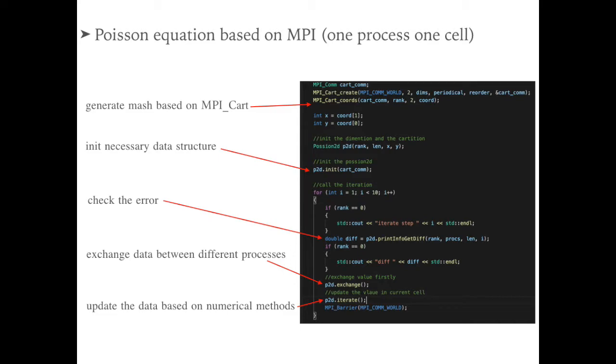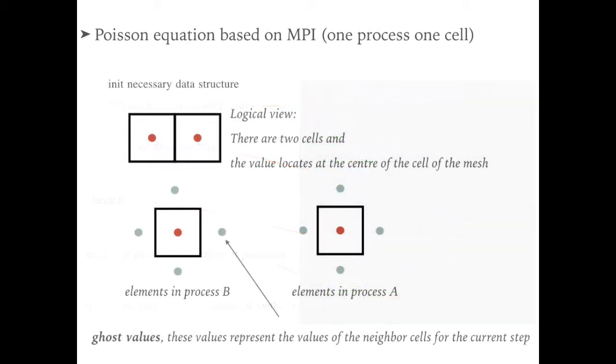Before diving into details of every step, let's discuss the concept of ghost values firstly. For the upper figure, there are two cells, and every cell contains one value. This is how we consider the mesh from the logic perspective. These mesh values are adjacent between each other. However, in practical case, for this example, there are two processes, and every process hold one value.